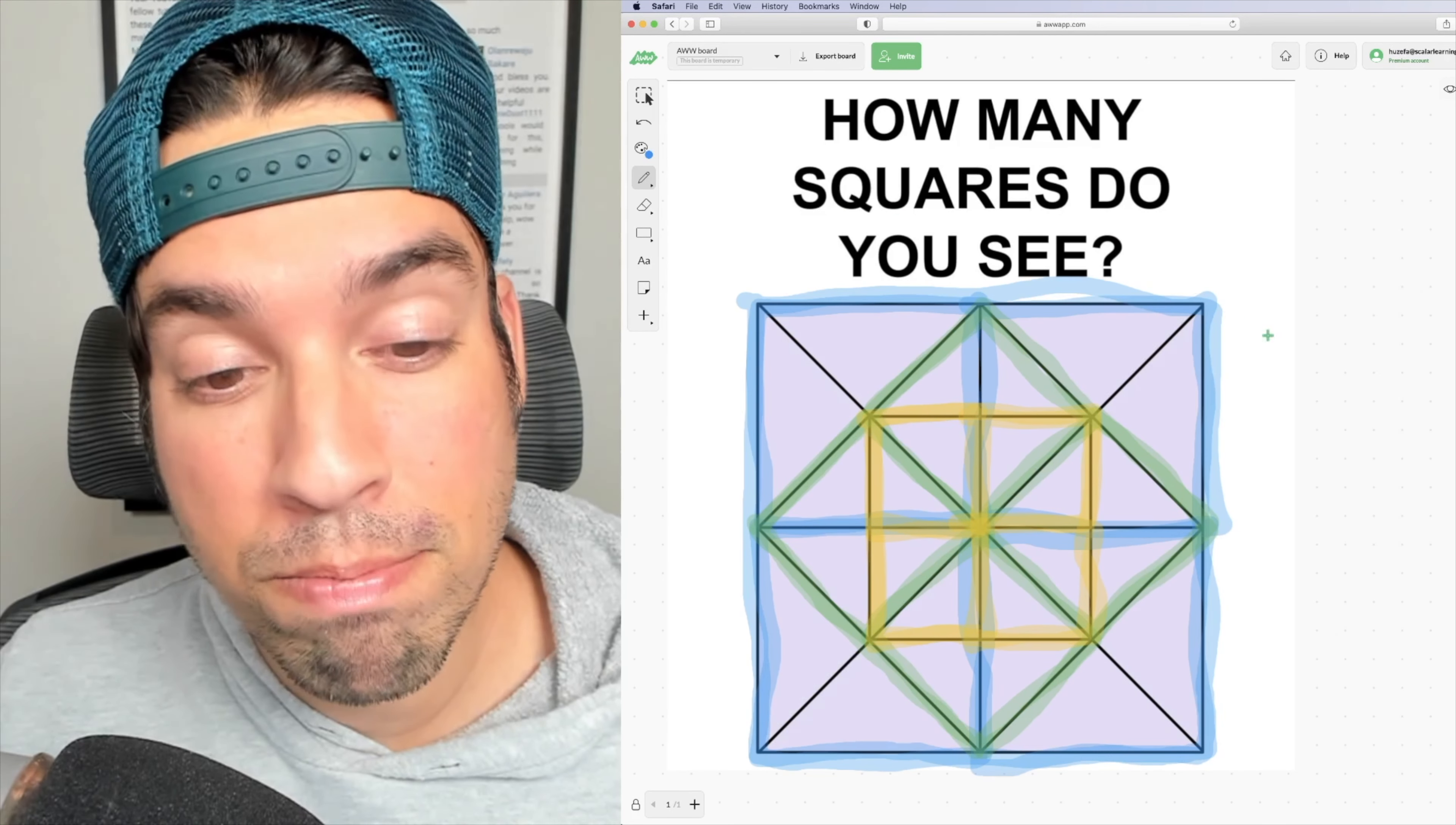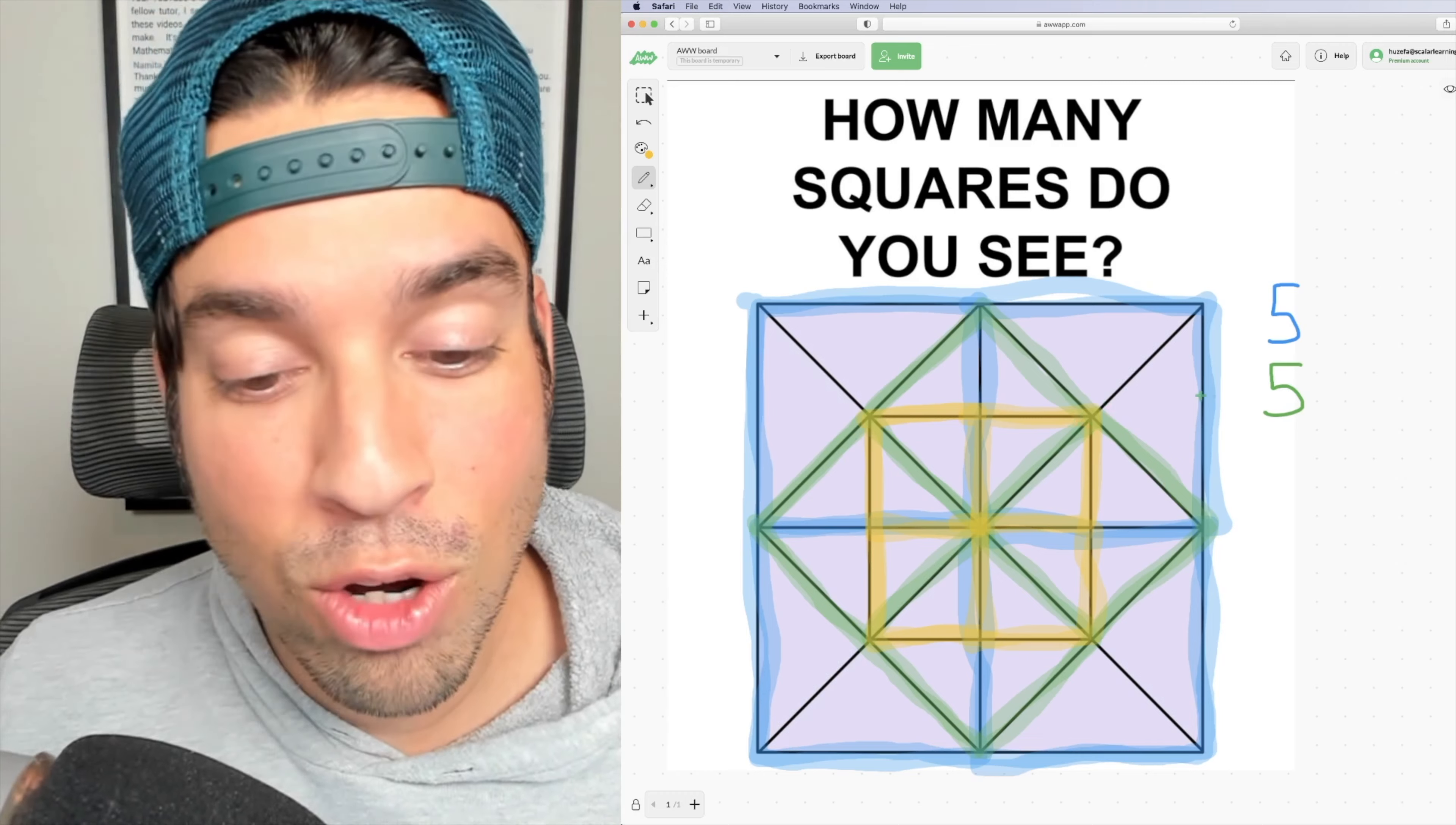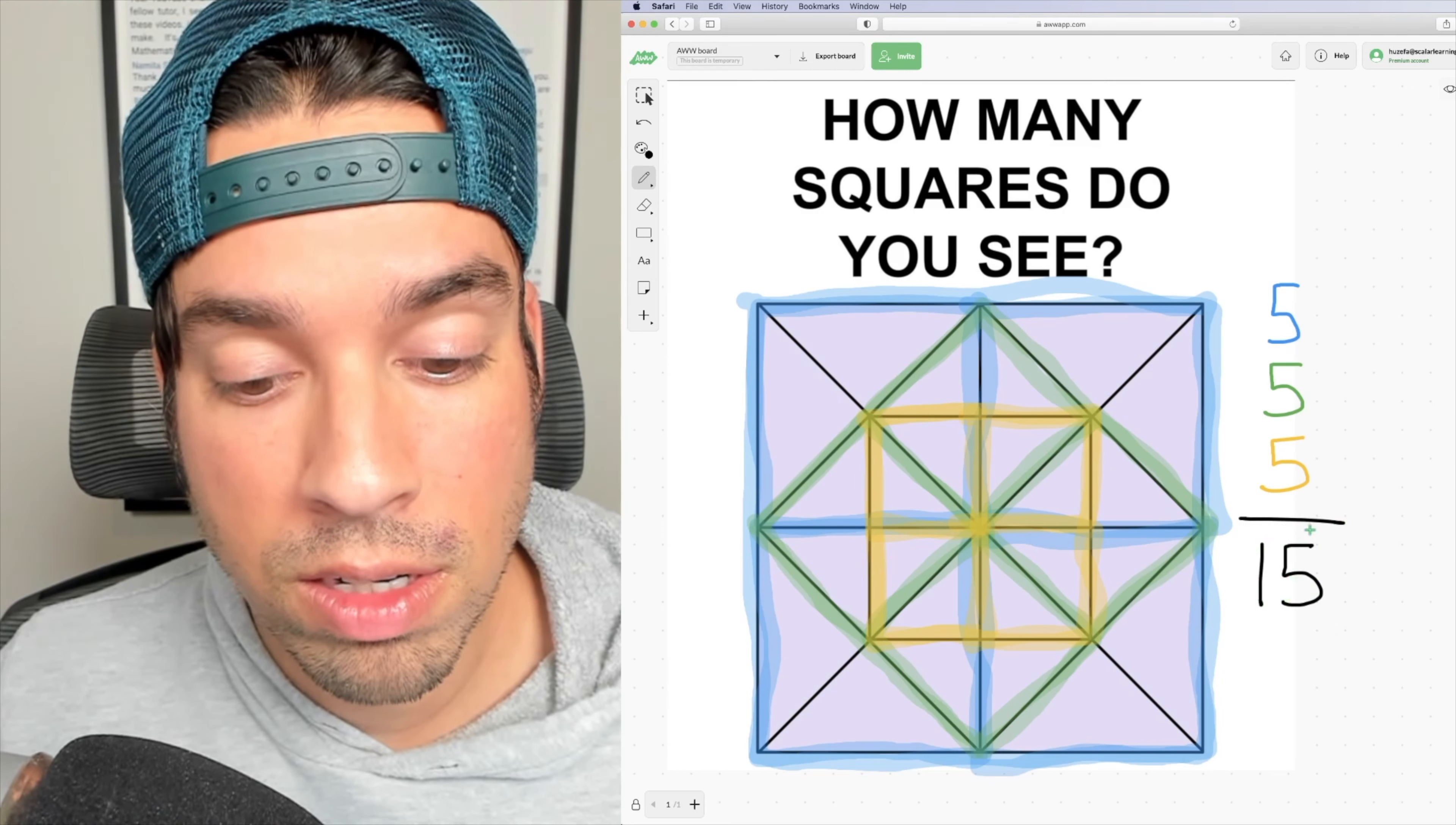So now all together in blue, I counted five squares. In green, I counted another five. And in yellow, I counted another five. This means that in total in this diagram, there are 15 squares.